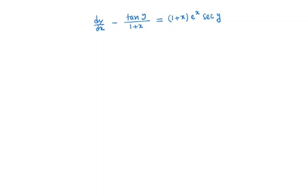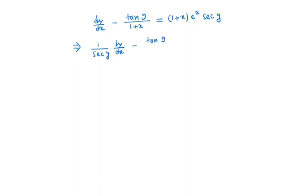So first we will try to simplify this equation by dividing both sides by sec y. So we have (1/sec y) dy/dx minus tan y divided by (1+x) sec y, which is equal to (1+x) e^x.